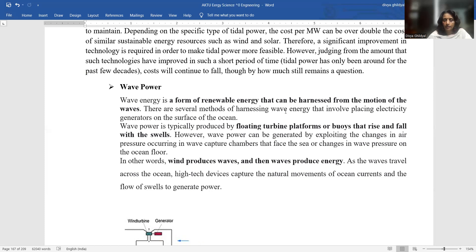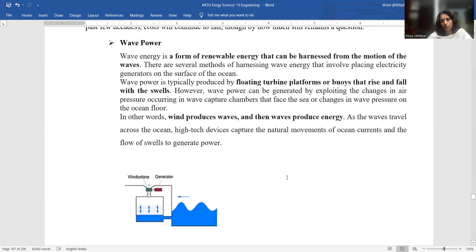Wave power is produced by floating turbine platforms that rise and fall with the swell of the wave. Wave power can be generated by exploiting the changes in air pressure occurring in wave capture chambers that face the sea or changes in wave pressure on the ocean.